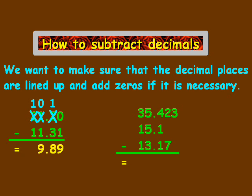Now let's take a little bit more complicated example here. We have 35.423 minus 15.1 minus 13.17. Again, we're going to do the same principle here. Decimal places are lined up, and then we want to add 0s if necessary. In this case, we're going to add 0s to the 15.1 and the 13.17, so we put 0s in there.